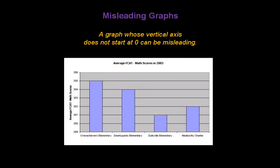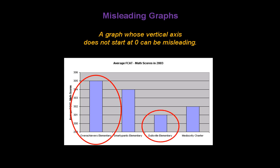Here are the math scores from 2003 for four elementary schools. This is a misleading graph — look at the vertical axis. It starts at 299, not at zero. Because of that, it makes it look as though the kids at Overachievers Elementary are three times as smart at math as the kids at Dullsville Elementary.